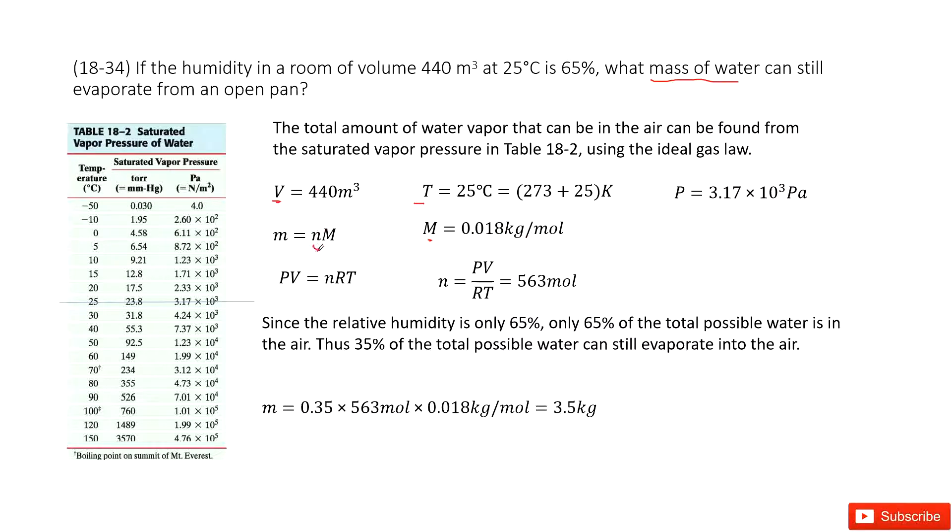So now it looks like we need to find n first, the mole number. Now we can see we have PV equal to nRT. So we can find n as PV divided by RT. You can see V is given, T is given, R is constant. Looks like we need to find P first, right?